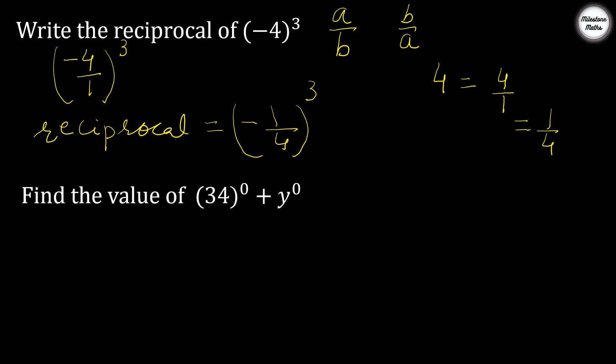Find the value of 34 raised to power 0 plus y raised to power 0. We know any number raised to power 0 equals 1. So 34 raised to power 0 is 1, and y raised to power 0 is also 1 — regardless of what value y takes. Therefore 1 plus 1 equals 2.